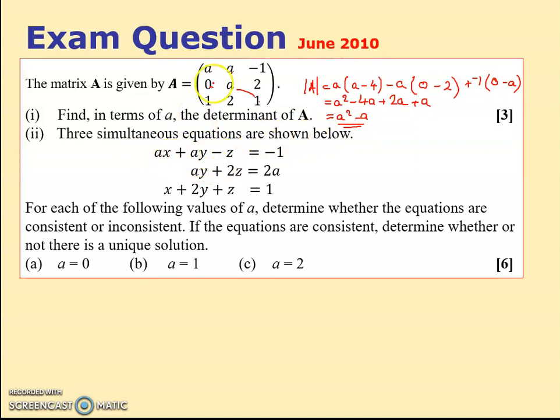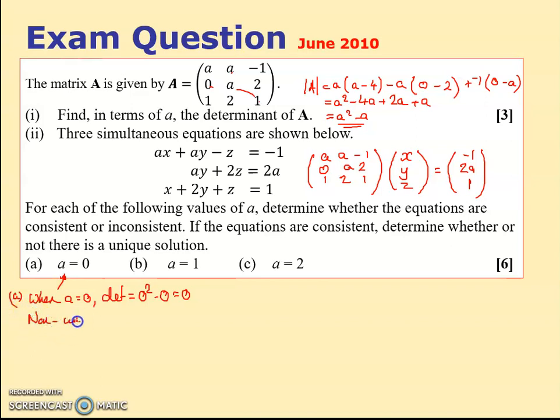Three simultaneous equations are shown below. You can bet your bottom dollar it's exactly the same. Yes, it is. It's exactly the same matrix. So effectively you've got A, A minus 1, 0, A, 2, 1, 2, 1. And it's times by x, y, and z. And the only difference now is we've got the right hand side. We're told that that is equal to minus 1, 2A, and 1. But of course, we still don't know what A is. For each of the following values of A, they're now going to tell me what A is. So when A is 0, let's just do this. When A equals 0, you can see if I put 0 into that, the determinant is 0 squared minus 0 is 0. So this will give me, straight away, I know for part A then here, this is a non-unique solution because straight away I'm getting some dodgy determinant of 0.